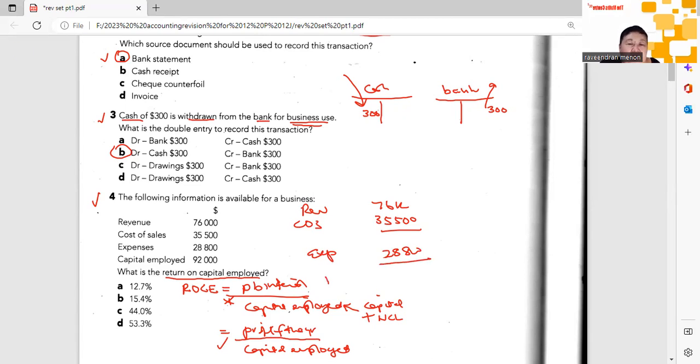Let me check that quickly: $76,000 less $35,500 equals $40,500, less $28,800 equals $11,700. So my calculation is $11,700 over capital employed $92,000 times 100, which gives me 12.7%. We are done. These are four different types of questions, just some practice for you.